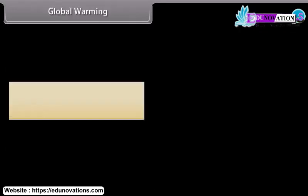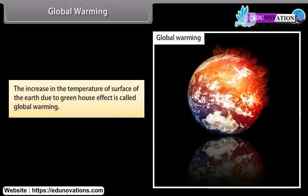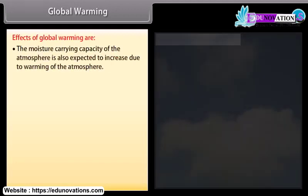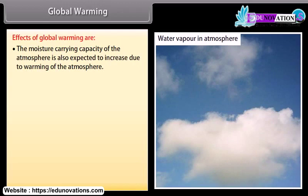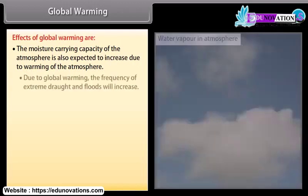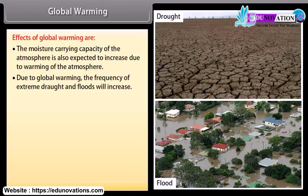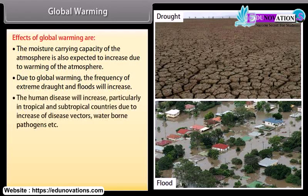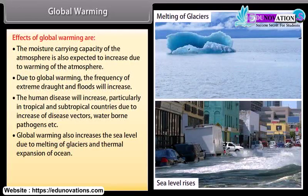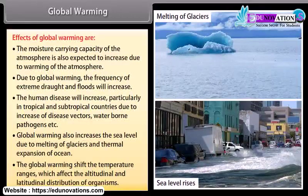Global warming is the increase in the temperature of the surface of the earth due to the greenhouse effect. Effects of global warming include: increased moisture-carrying capacity of the atmosphere, increased frequency of extreme drought and floods, increased human disease particularly in tropical and subtropical countries due to disease vectors and waterborne pathogens, rising sea levels due to melting of glaciers and thermal expansion of oceans, and shifts in temperature ranges affecting the altitudinal and latitudinal distribution of organisms.